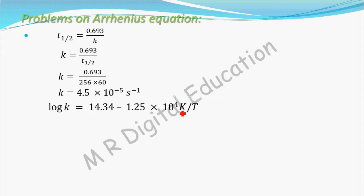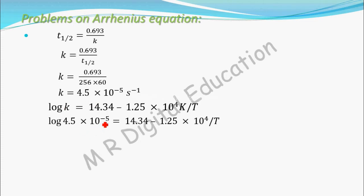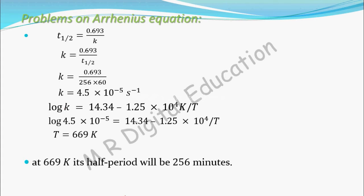Now substitute K = 4.5 × 10⁻⁵ into the given equation: log(4.5 × 10⁻⁵) = 14.34 − 1.25 × 10⁴ / T. The only unknown is temperature T. Simplifying this equation gives T = 669 K. So at 669 K, the half-life period of H₂O₂ decomposition will be 256 minutes.